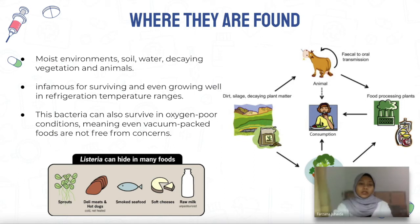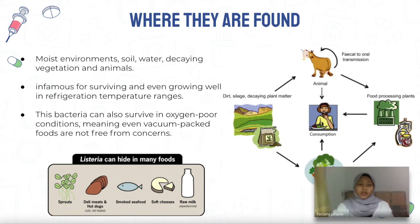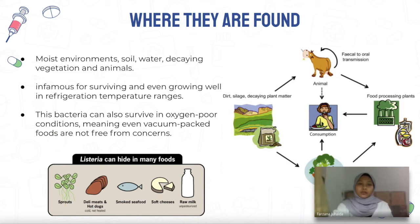Listeria monocytogenes mostly grow in moist environments — in soil, water, decaying vegetation, and animals. They are infamous for surviving and growing well at refrigeration temperatures, and they can also survive in oxygen-poor conditions because they are facultatively anaerobic, meaning they can survive in processed food, canned food, and vacuum-packed foods.